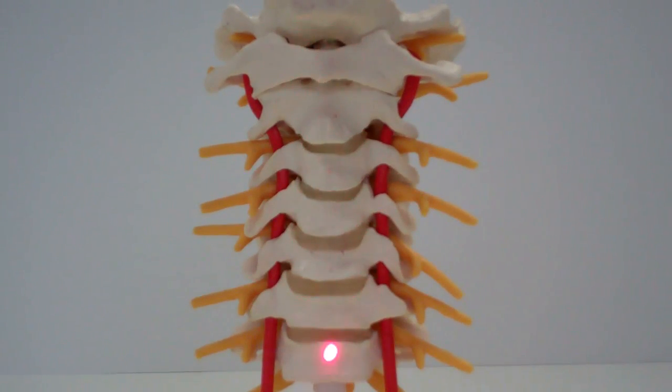Okay, so now we're looking at the front part of the bones in your neck, the so-called cervical spine, and there are about seven of them.